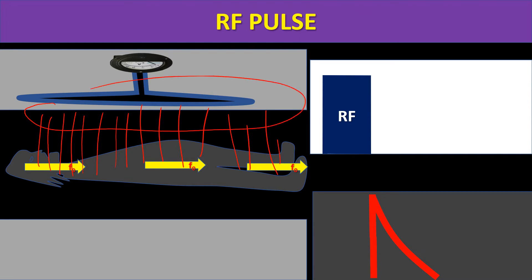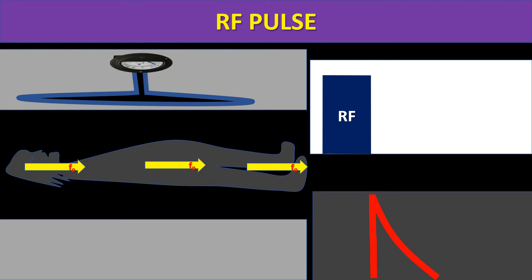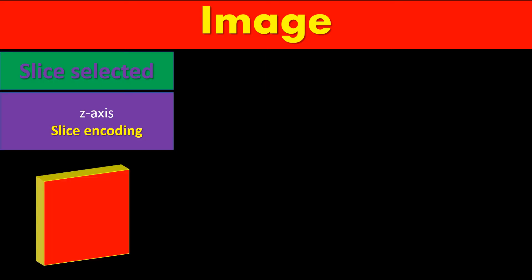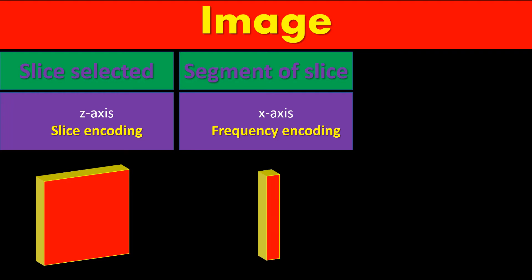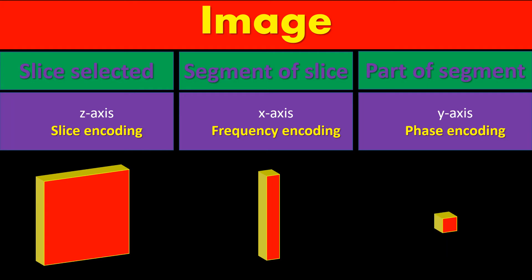The amplitude signal alone won't give us an image. To make an image, we first select a slice from the entire body, then identify signals coming from each stripe within the slice, and finally determine signals from each voxel. This is how we build up an image.